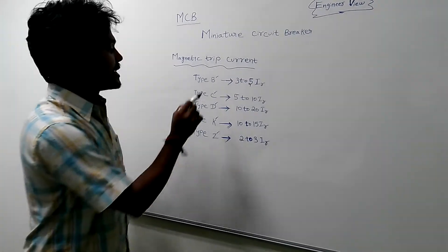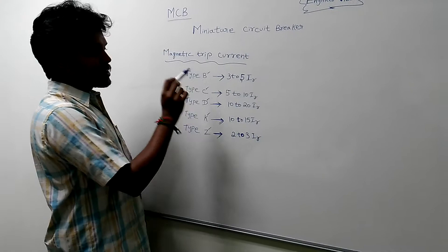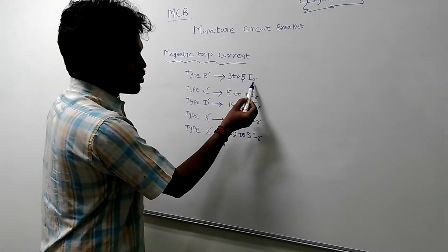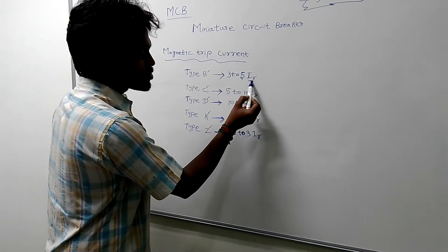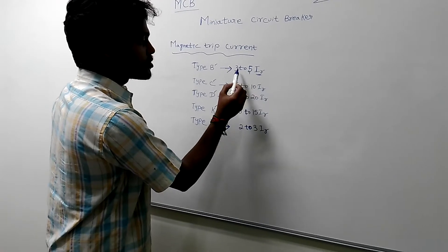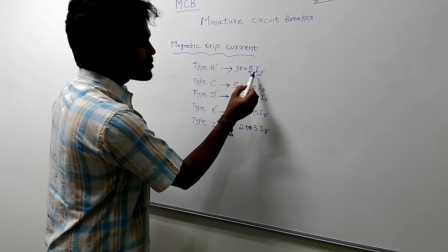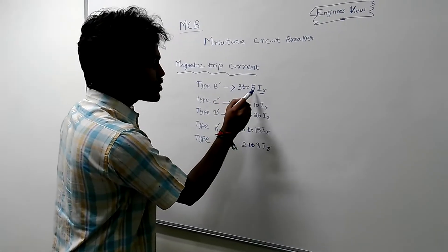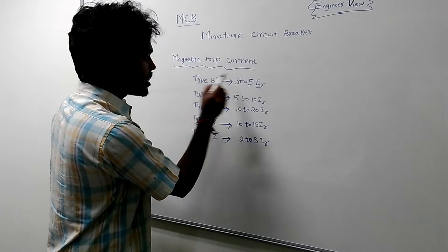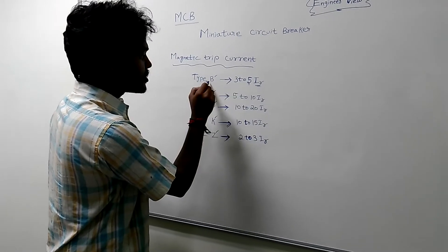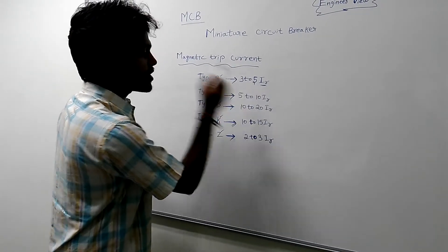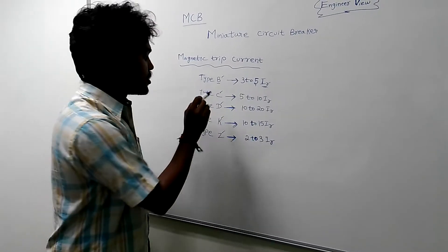If you want to talk about MCB Type B, it trips at 3 to 5 times the full load current. The rated current is the full load current, so the tripping range is 3 to 5 times of the rated current — that is the tripping capacity for Type B.